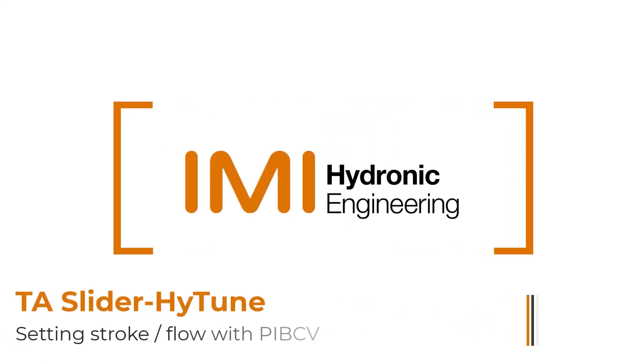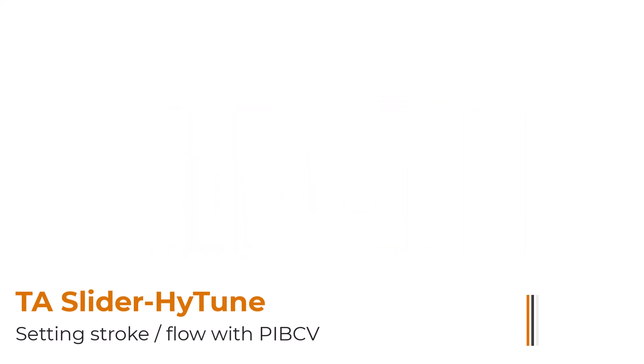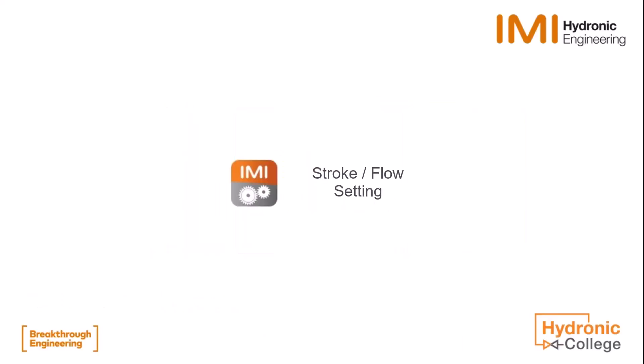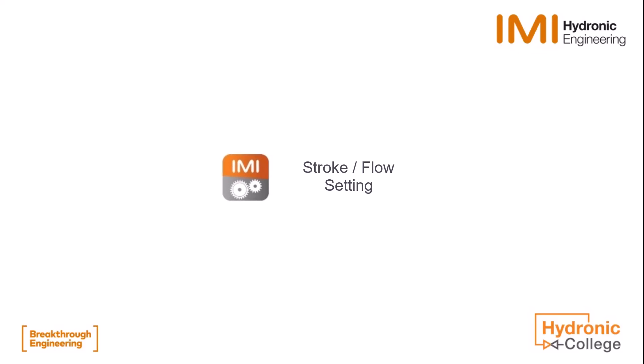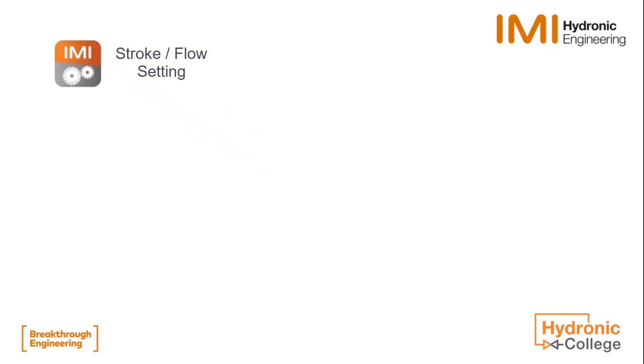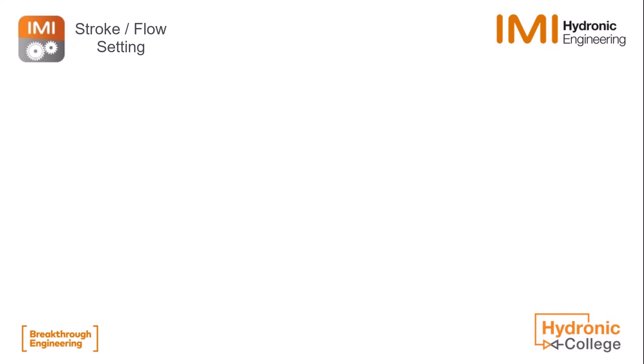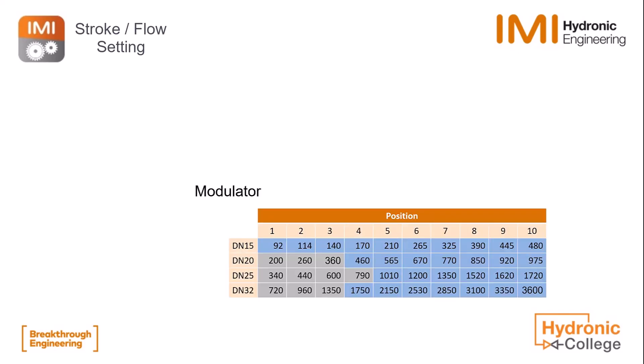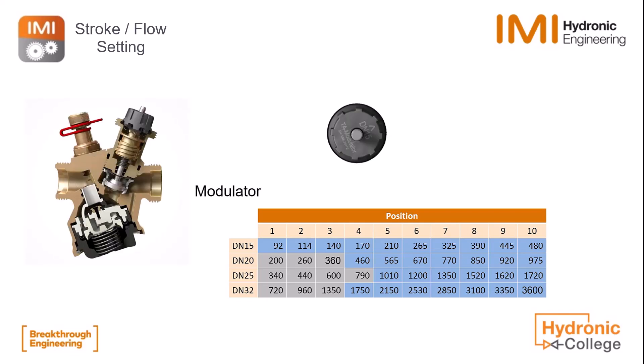Here we will talk about the possibilities when setting a combination slider with PI-BCV, like TA Modulator or TA Compact. A big advantage of using PI-BCV is that we know at which setting which flow will be limited by the valve. Since the TA Slider has all valve settings and flows in its memory, we now have the possibility to set the actuator to limit on flow instead of on stroke only. An additional option is that you can communicate this information via the bus when using a bus actuator.